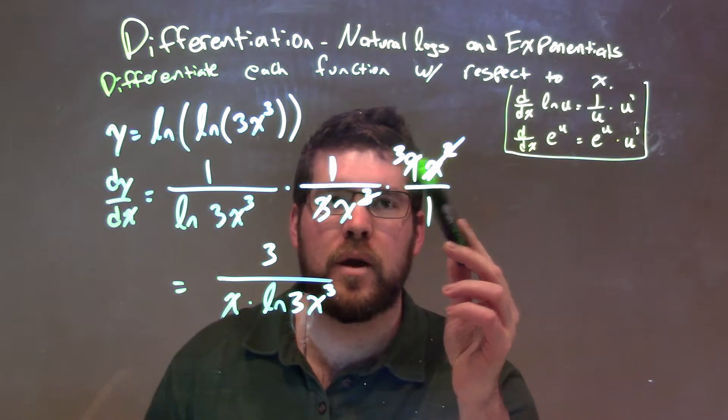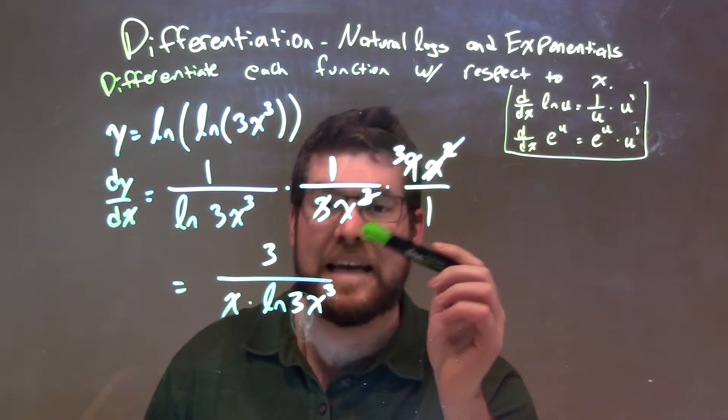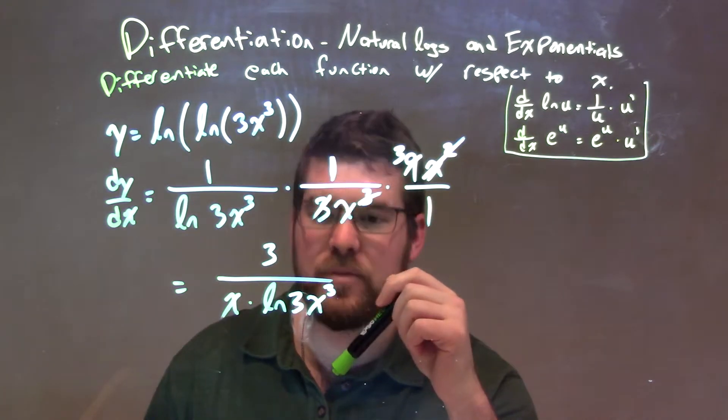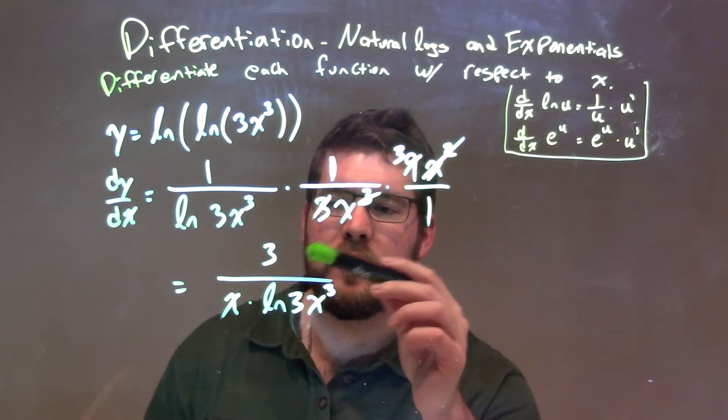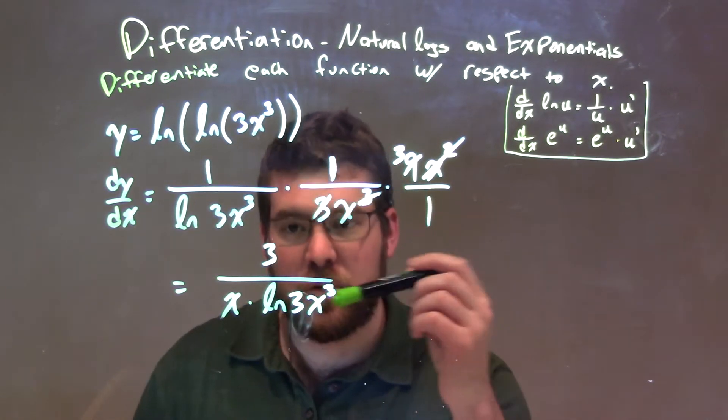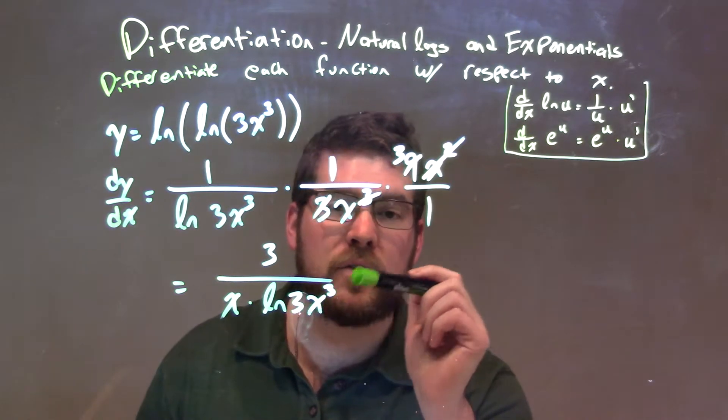9 and 3 simplify to 3 in the numerator, x squared over x to the third simplify to have x in just the denominator, 1x in the denominator. We rearrange that x to come up front, 3 is the numerator. So, again, our final answer here is 3 over x times the natural log of 3x to the third.